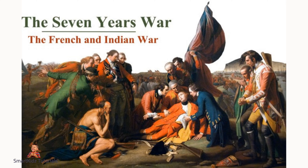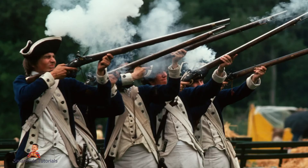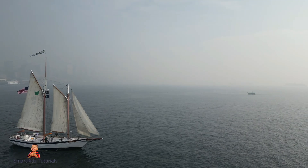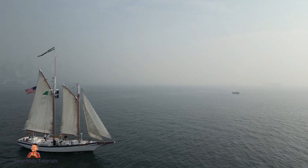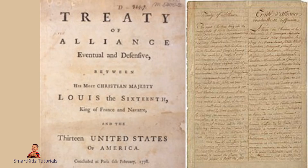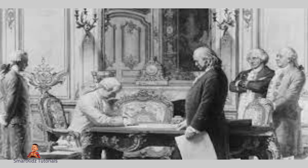Desire for Revenge: The French were still bitter about their defeat in the French and Indian War, known as the Seven Years' War in Europe, against Britain, and saw the American Revolution as a chance to settle scores and diminish British power. Ideological sympathy: The French Enlightenment, with its emphasis on liberty, equality, and individual rights, had a significant influence on French society, and the American colonists' struggle for independence resonated with these ideals. Potential trade and economic benefits: France also saw potential economic advantages, believing an independent America could become a valuable trading partner. In 1778, France formally allied with the American colonies by signing the Treaty of Alliance, providing military and financial support including French troops, weapons, supplies, and naval assistance. French involvement helped shift the balance of power in favor of the colonists and significantly contributed to their ultimate victory.